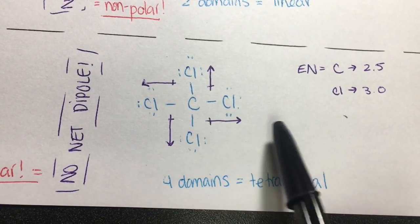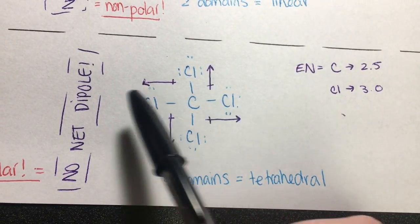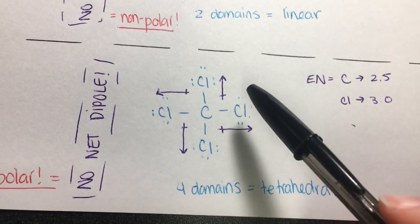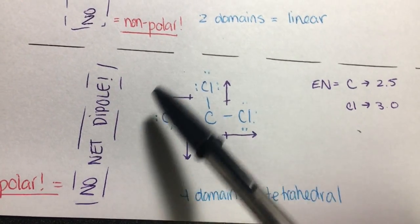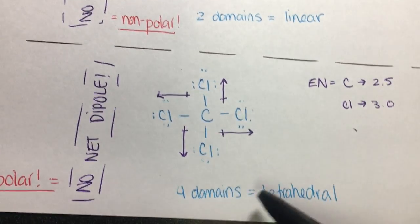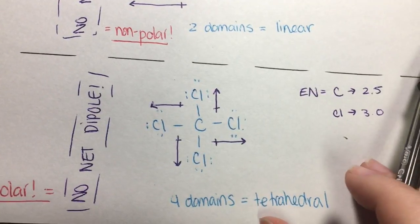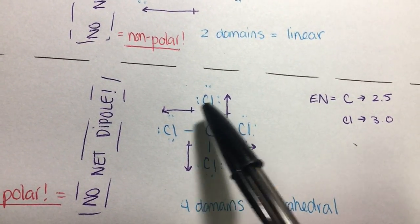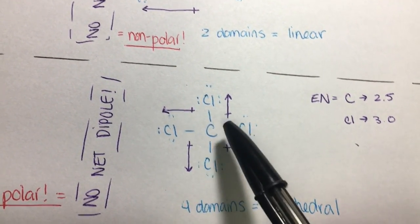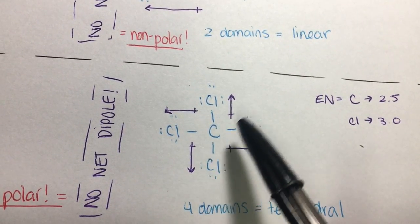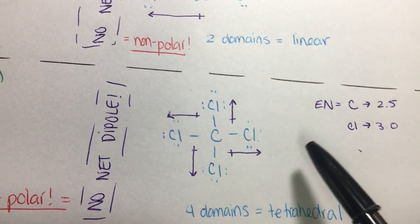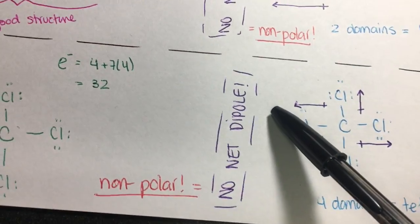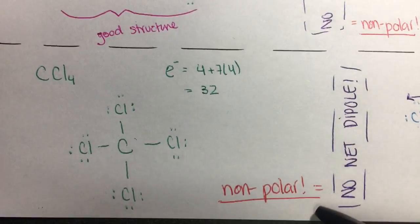Since all four domains are the same in the tetrahedral molecule, even though it doesn't look flat on paper, all the dipoles cancel each other out and there is no net dipole. So CCl₄ is non-polar.